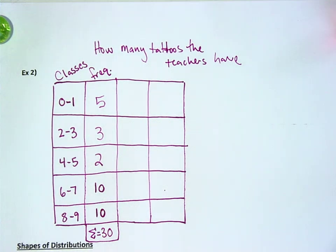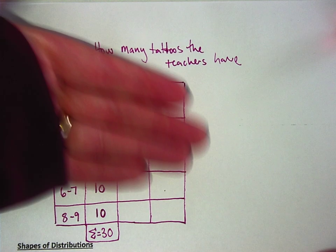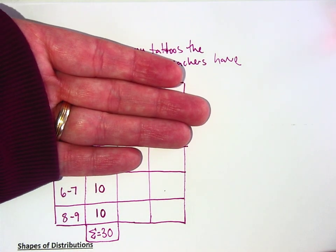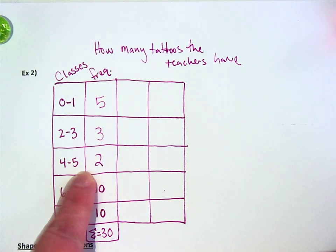Now, if I was asked to find the, and like, let's pretend this data is real. If I was asked to find the average number of tattoos a teacher has, do you see how each category isn't weighted the same? There are some categories, like these bottom two categories which are way heavier than like this category, that four to five. Does that make sense to you guys?